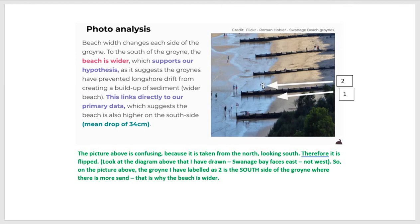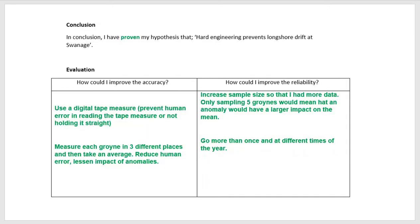So hopefully that clears that up for you a little bit. I know it is super confusing — spend a little bit of time just thinking about it and having a look at that diagram and hopefully that will become clear. The upshot of all of it is if you were carrying out this field work and you had got those results, then you would be able to say that both your primary data and your secondary data have proven your hypothesis that hard engineering would prevent longshore drift at Swanage. If that still doesn't make sense, please do let me know and I will try to go over it with you again. Okay, thanks very much Year 11, see you later.